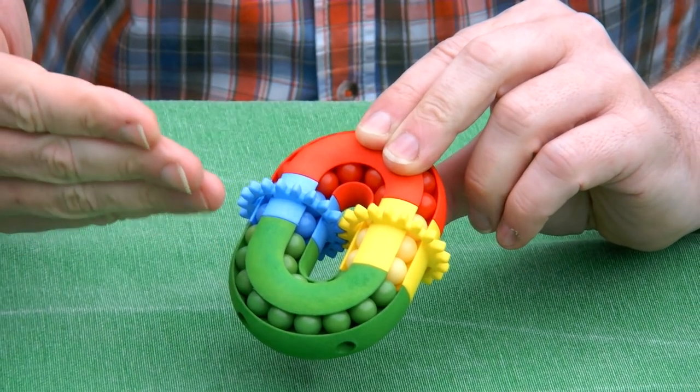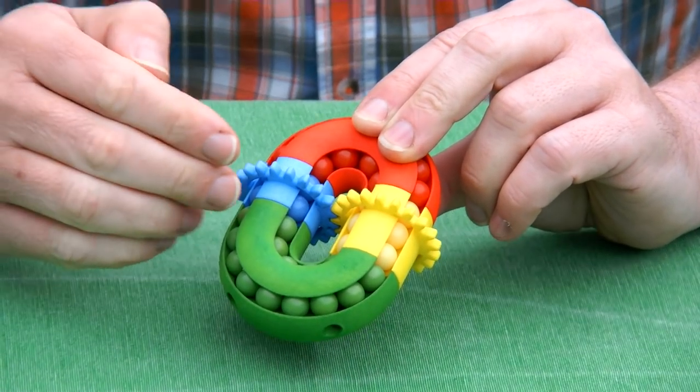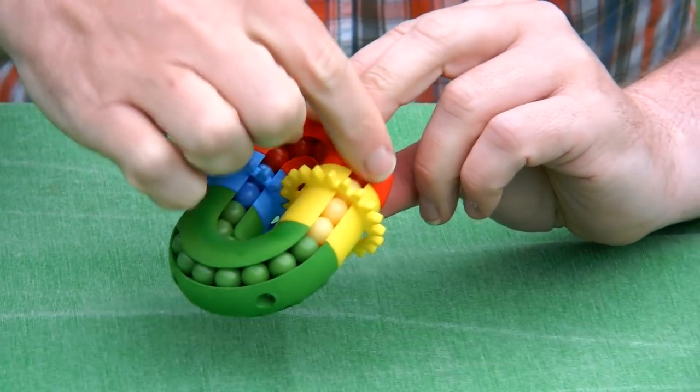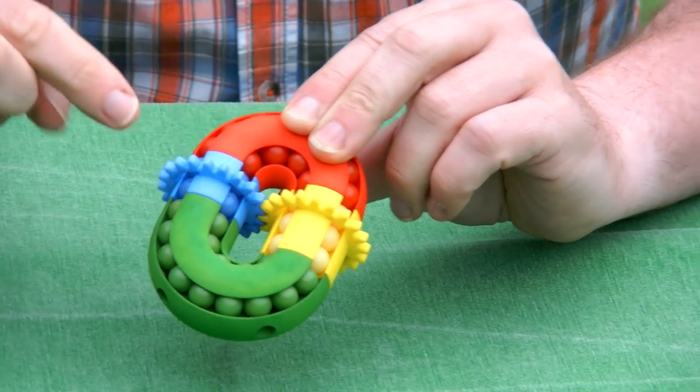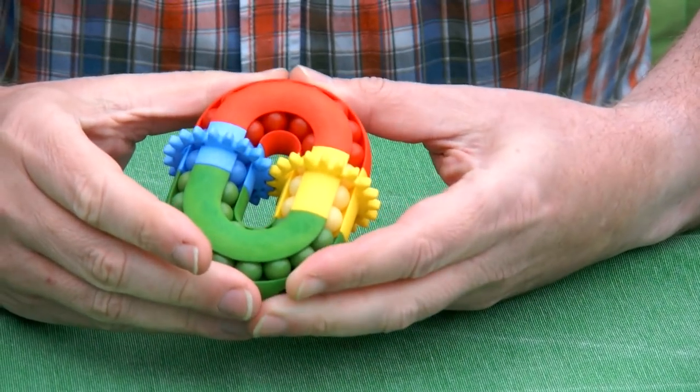And I decided to make the gears different from each other, or actually the length. Here we have three and two beads so that everything scrambles a bit better.